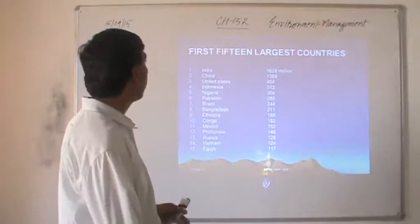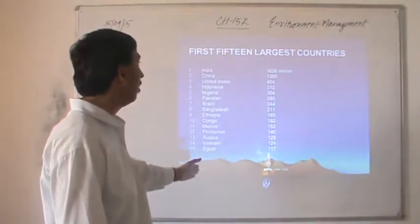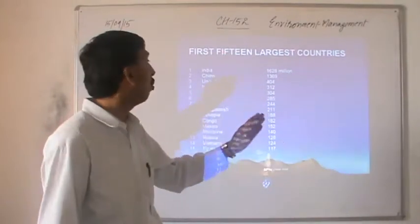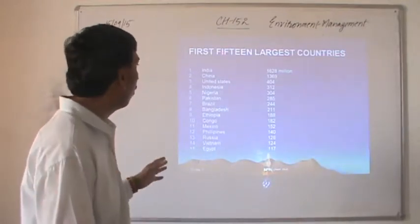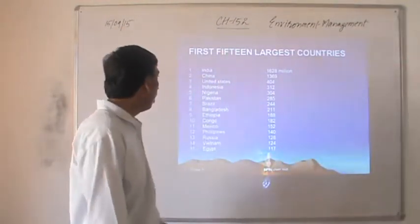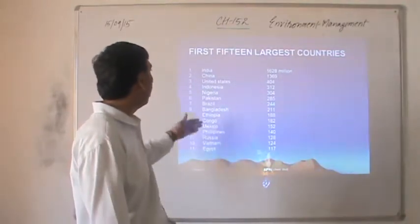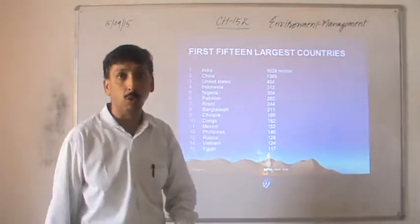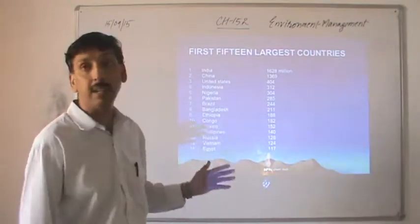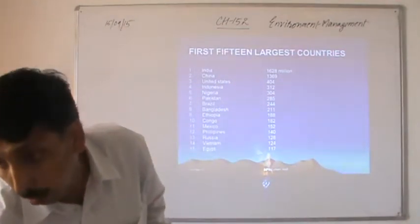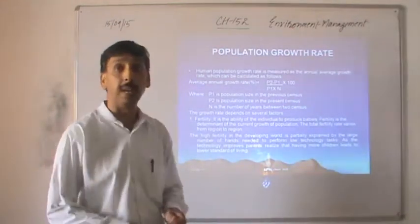Looking at the first 15 largest countries, India is heading above all others with a population of 1,628 million, China at 1,369 million, the US at 404 million, Indonesia at 312 million, and Egypt at 117 million. From these statistics you can understand that among the first 15 largest countries, India is leading with a population of 1,628 million. Now let us see the population growth rate and how it affects the overall increase in population.